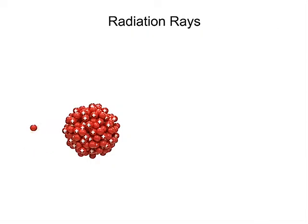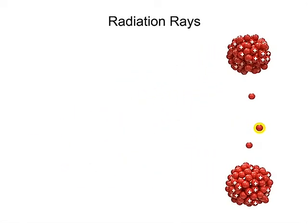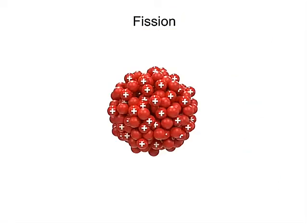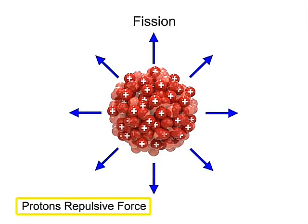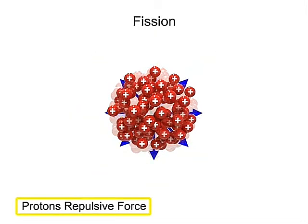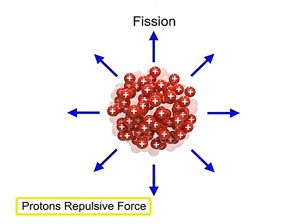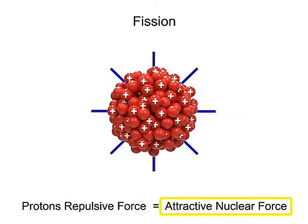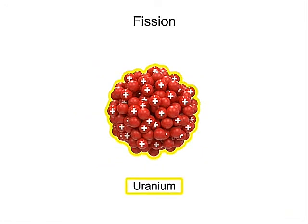When a neutron is fired at high speed into an atom of uranium, it will split the atom in a process called fission. The stability of the nucleus of an atom is maintained by the balance between the repulsive electrical force among protons and the attractive nuclear forces holding the nucleus together. With uranium, this balance is unstable.